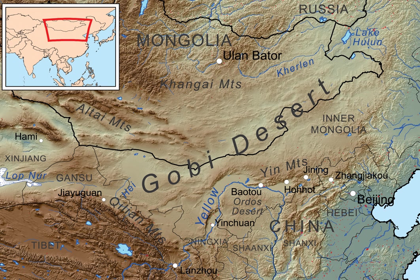The Gobi is notable in history as part of the Great Mongol Empire, and as the location of several important cities along the Silk Road. The Gobi is a rain-shadow desert, formed by the Tibetan Plateau blocking precipitation from the Indian Ocean reaching the Gobi territory.